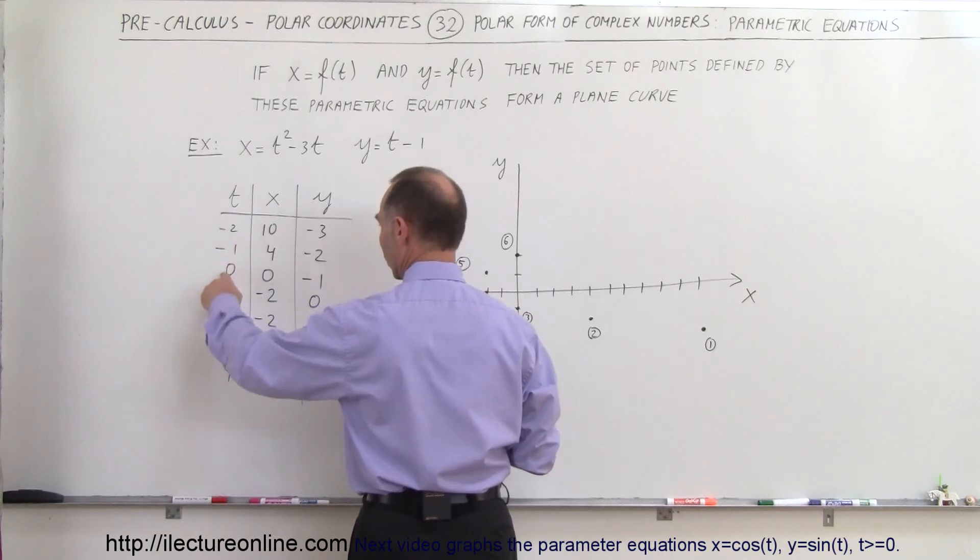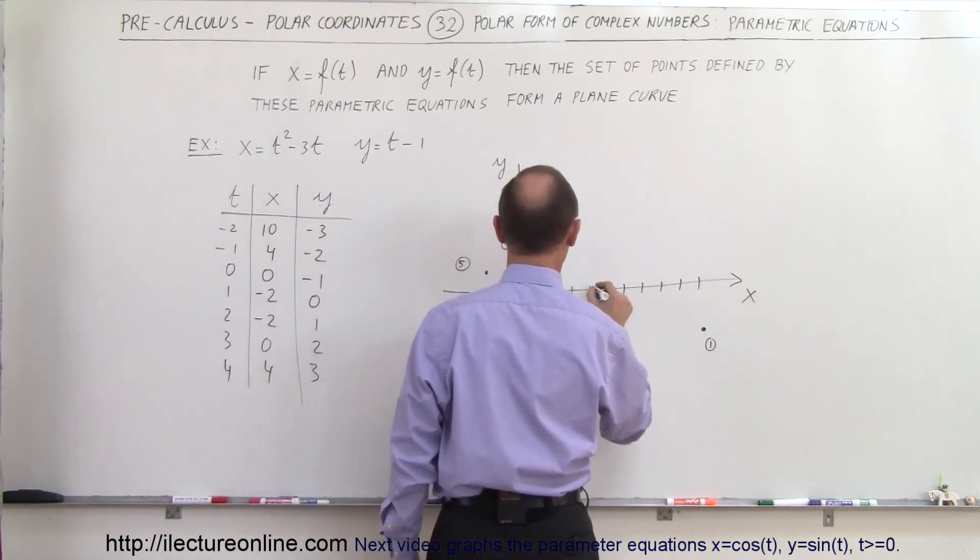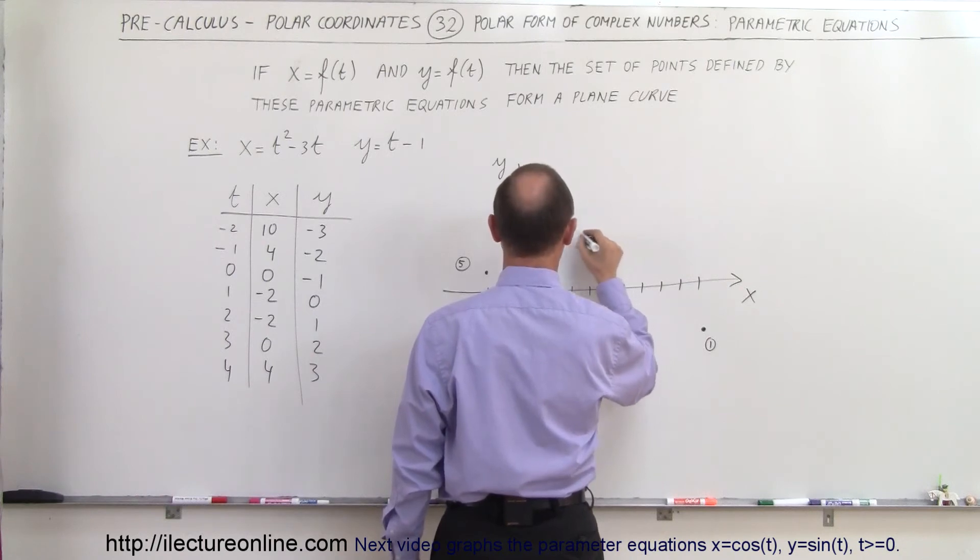And the next point, that would be (4, 3). That would be this point right there. That would be point number 7.